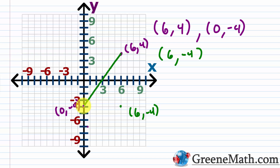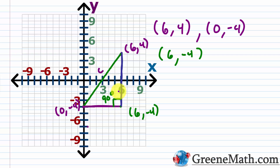We draw in the right triangle and mark the 90-degree angle symbol. The side opposite the 90-degree angle is the hypotenuse, labeled C. The horizontal leg, parallel to the x-axis, I'll call leg B. The vertical leg, parallel to the y-axis, I'll call leg A. You can interchange A and B — as long as the hypotenuse is labeled C, the formula will work.